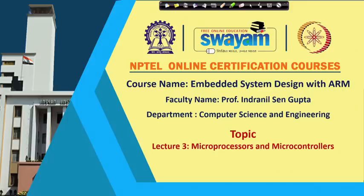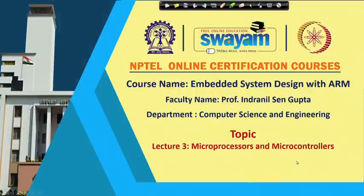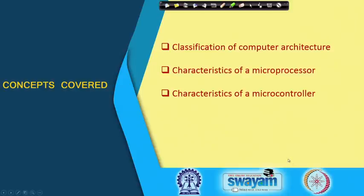In this lecture we shall be talking about some basic concepts of microprocessors, microcomputers and microcontrollers, because these are the brain or the processing power behind any embedded system that we see around us. So, it is always good to know what are the main differences between these things. The topic of the lecture is microprocessors and microcontrollers. We shall be talking about some classification of computer architectures followed by the main characteristic features of microprocessors and microcontrollers.